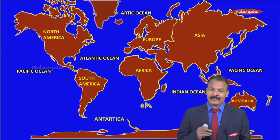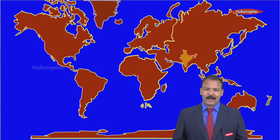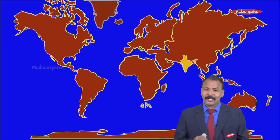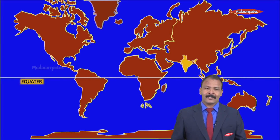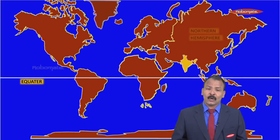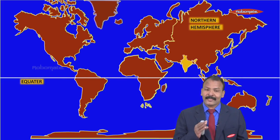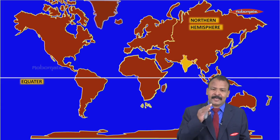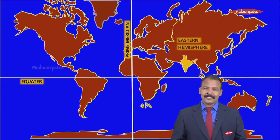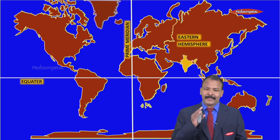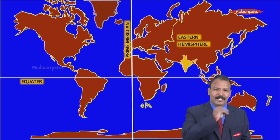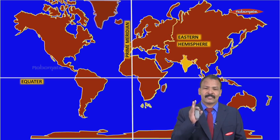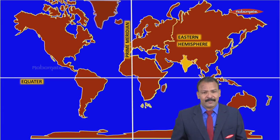These are the oceans and continents. Now comes India. India lies here. How will we explain its location? First, India lies in the northern hemisphere because it is above the equator. Similarly, India lies in the eastern hemisphere because it lies towards the east of the Prime Meridian.